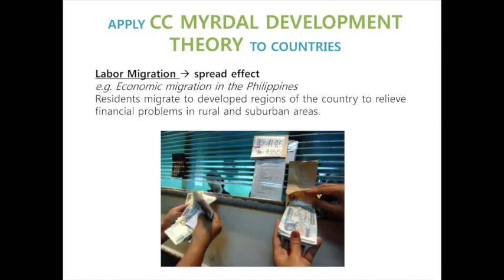Myrdal analyzes that residents tend to migrate to developed regions of the country for social and financial reasons, and this is especially true with the case of economic migration in the Philippines. Filipino residents in rural areas move to metro cities like Metro Manila for better job opportunities and better education. As a spread effect, the destination will benefit the origin and its surroundings since workers often send remittances to relieve disparities.